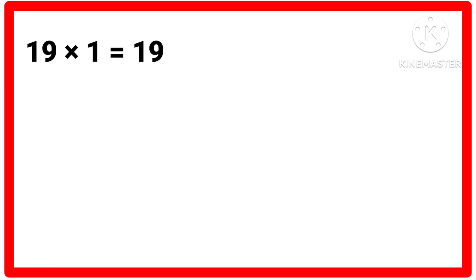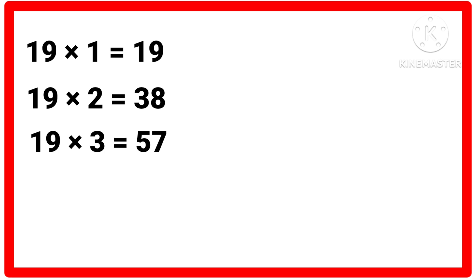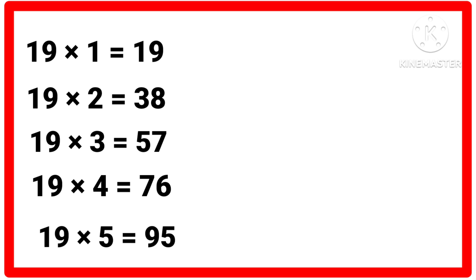Table of 19. 19 ones are 19, 19 twos are 38, 19 threes are 57, 19 fours are 76, 19 fives are 95.